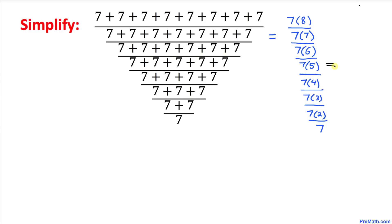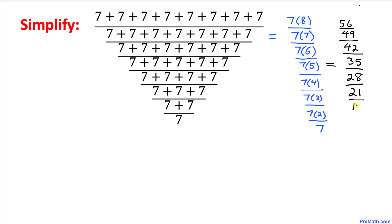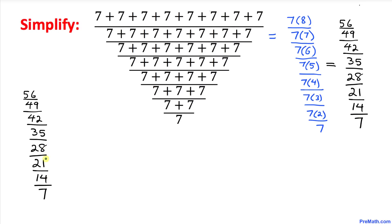Let's go ahead and multiply these numbers out. Seven times eight is 56, divided by seven times seven which is 49, divided by 42, divided by 35, divided by 28, divided by 21, divided by 14, divided by 7.